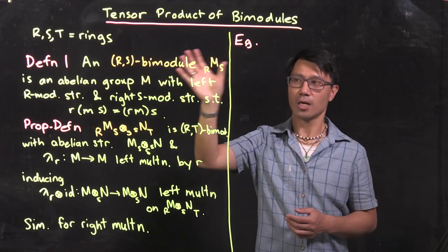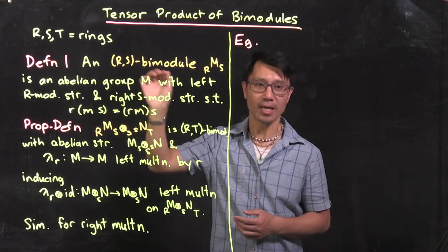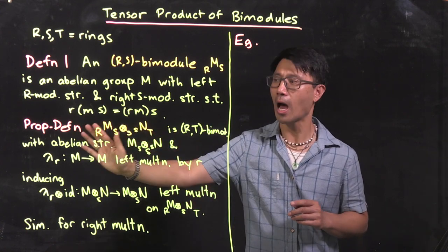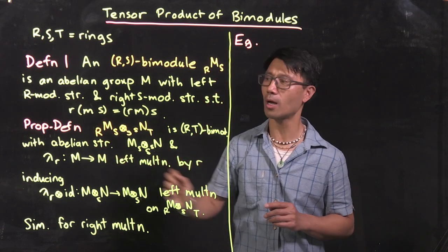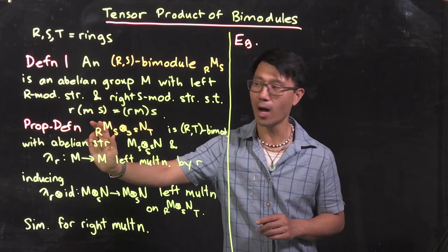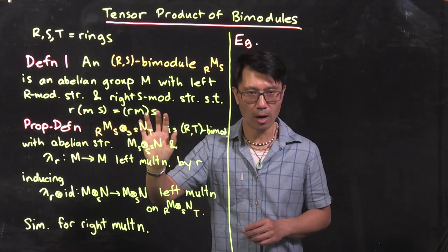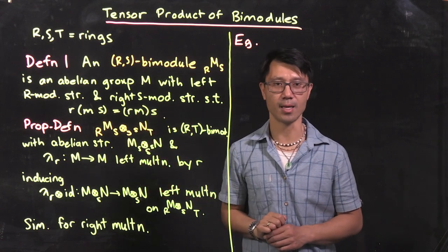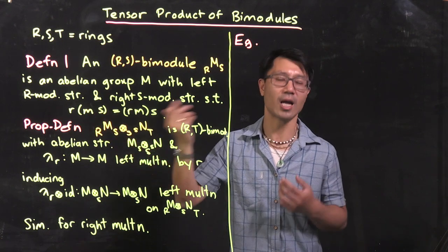An R,S-bimodule is something which is simultaneously a left R module and a right S module, where those two actions interact compatibly. The compatibility condition is the following associativity law: if M is an element of the module and r, s are elements of rings R and S, you can first multiply M on the right by s and then on the left by r, or multiply on the left by r first then on the right by s, and these two products are equal — it looks just like an associativity formula.